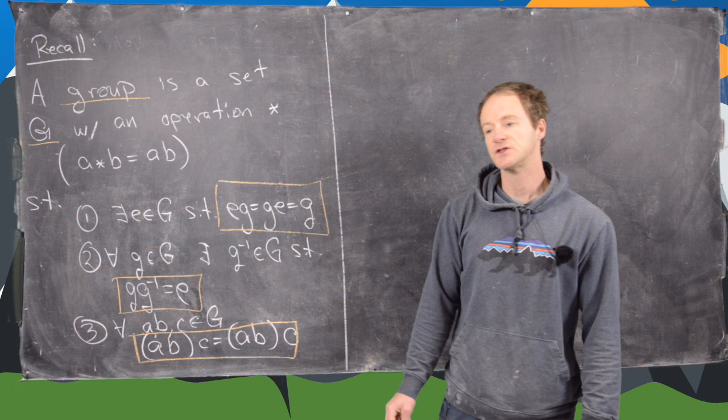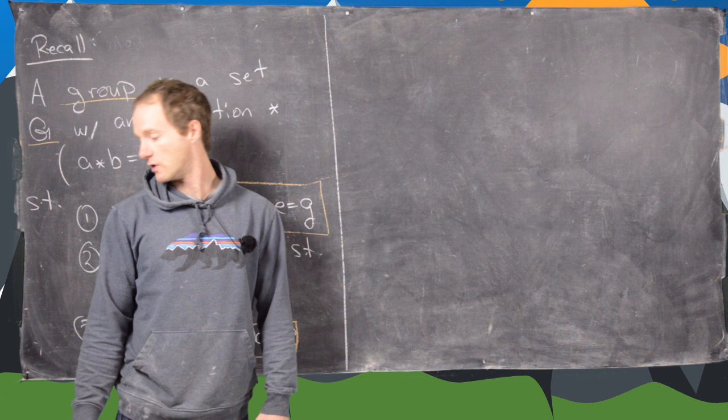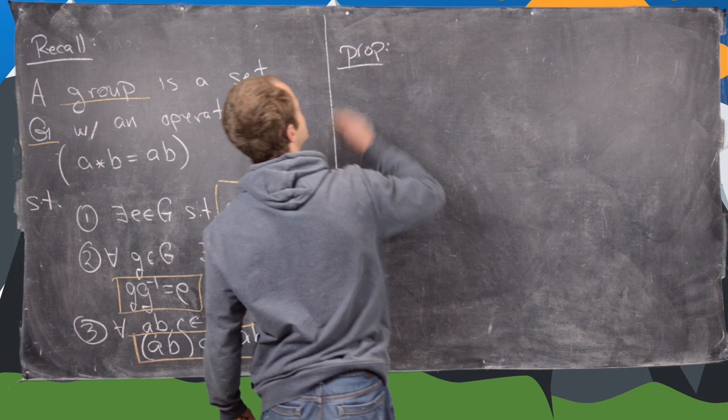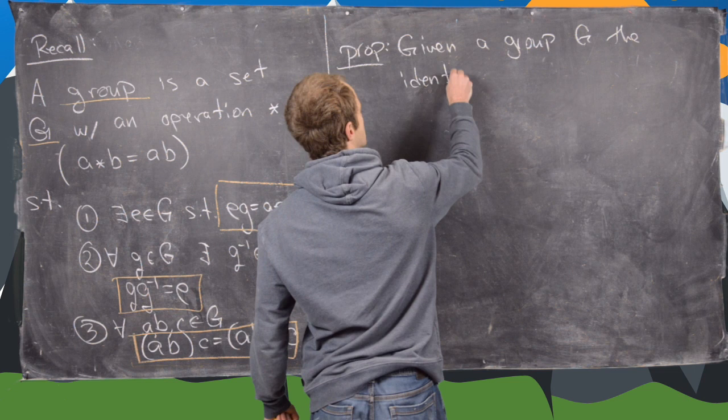So what I want to do now in this video is prove a couple of properties that are true of groups in general. And the first one is given a group G, the identity is unique.